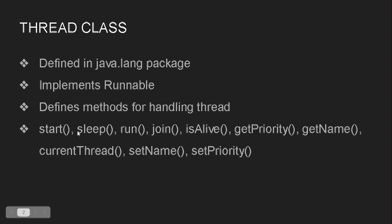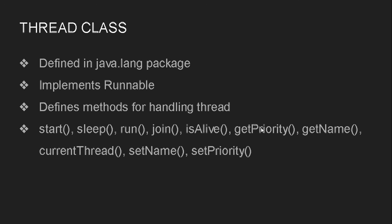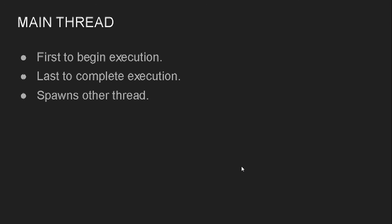Now, out of these methods, sleep() and currentThread() are static methods. By static I mean we can call them by writing the class name — that is, Thread.sleep() and Thread.currentThread(). All other methods like start(), run(), join(), isAlive(), getPriority(), setName(), and setPriority() are non-static methods, which means we need to have an object to access or call these other methods.